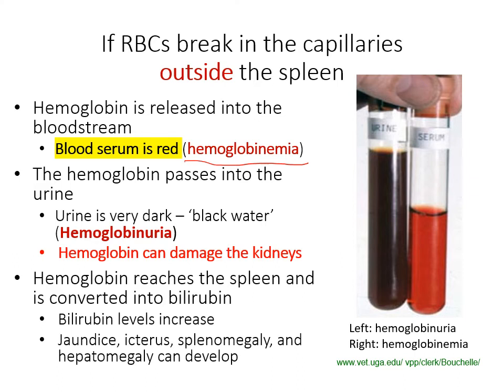The hemoglobin can also pass into the kidneys — when that blood reaches the kidneys, it's filtered out and passes into the urine. We now have hemoglobinuria, where the urine is very dark because of the hemoglobin, and it's termed 'black water.' In this figure you can see the very dark urine of hemoglobinuria, and on this side you can see the blood serum is red instead of the normal straw-colored or yellow blood serum.